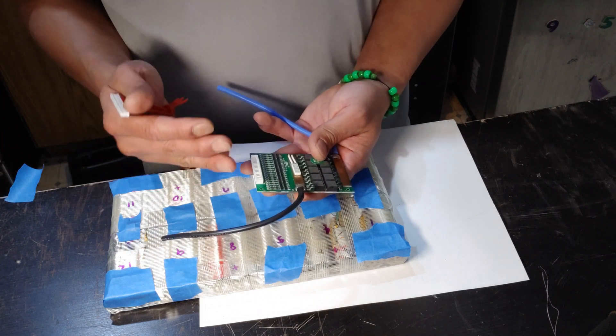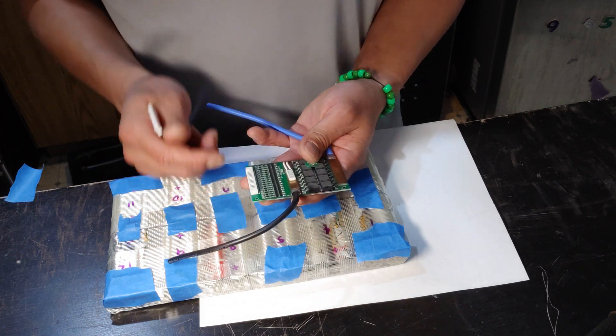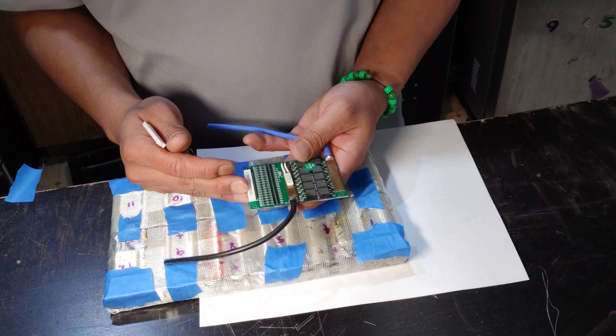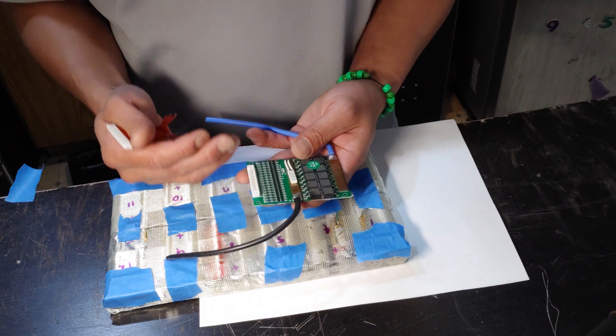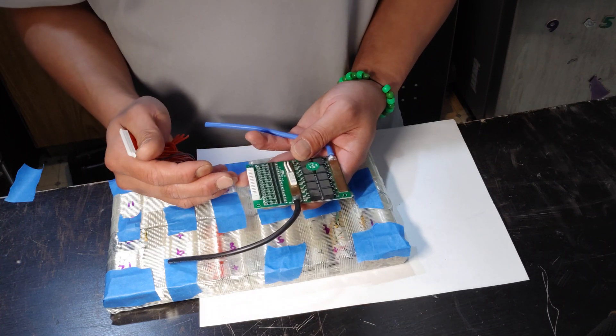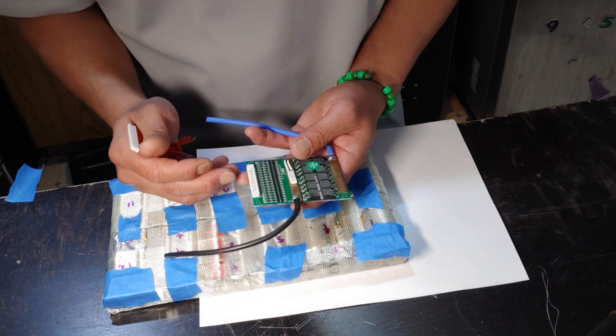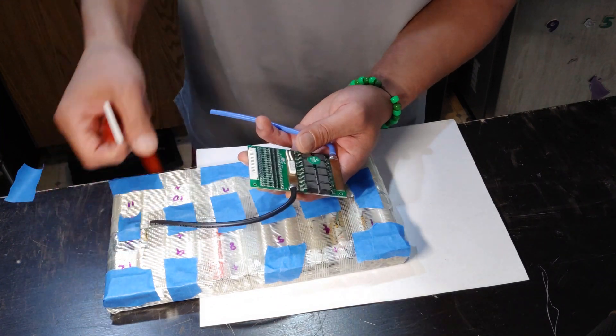Now your battery will still be balanced because you're going to charge through the BMS, and this allows you to use a much smaller BMS without having to use a huge BMS that can handle the power of your battery pack.